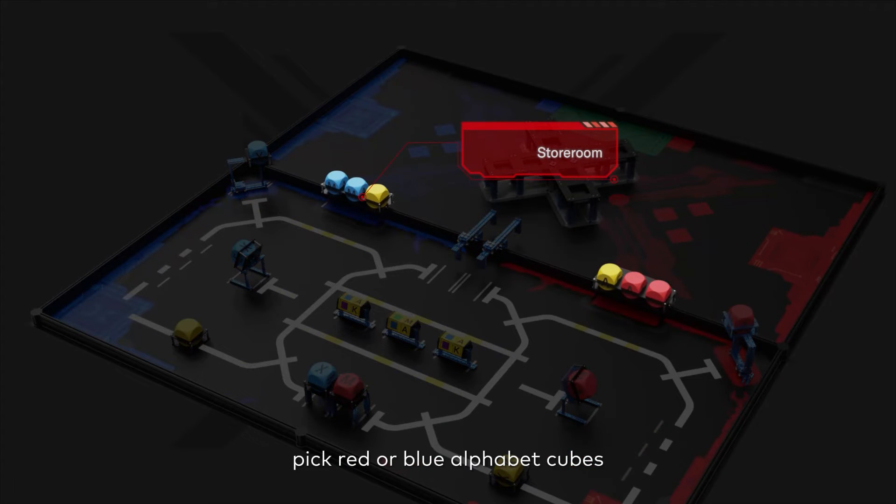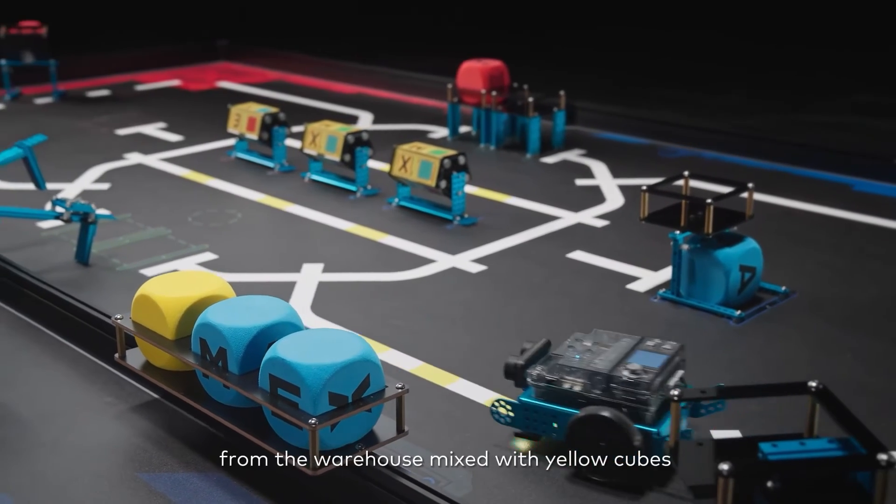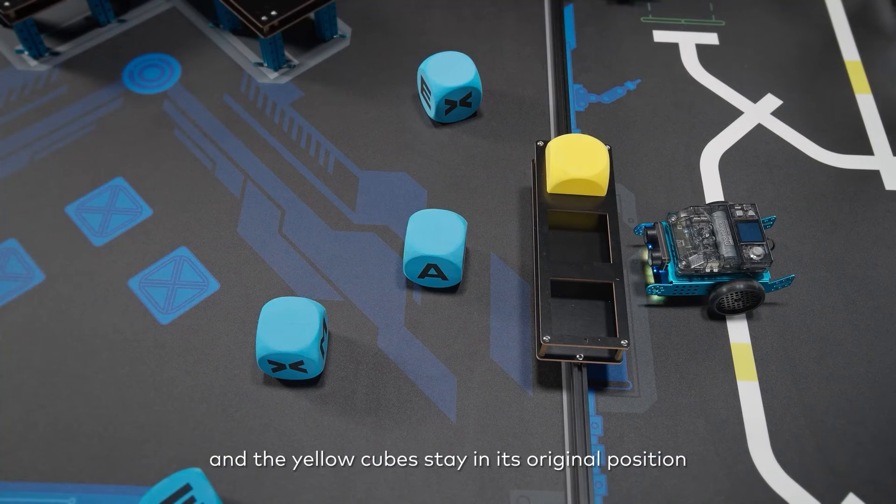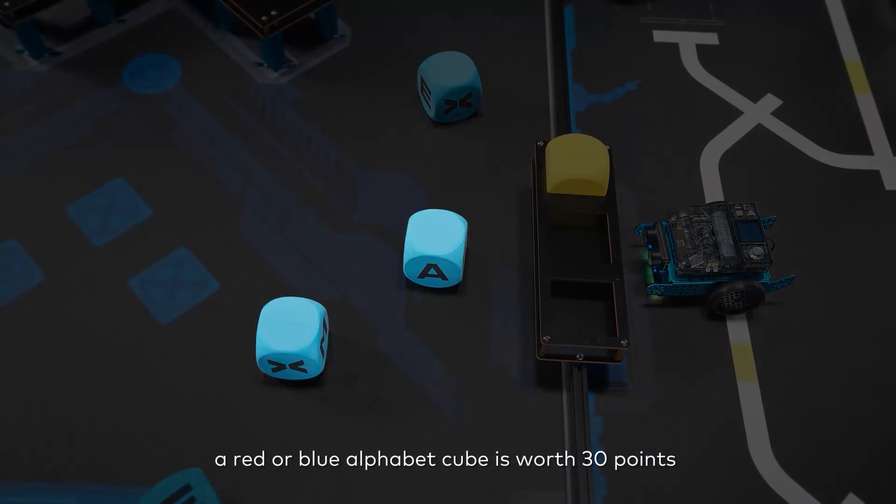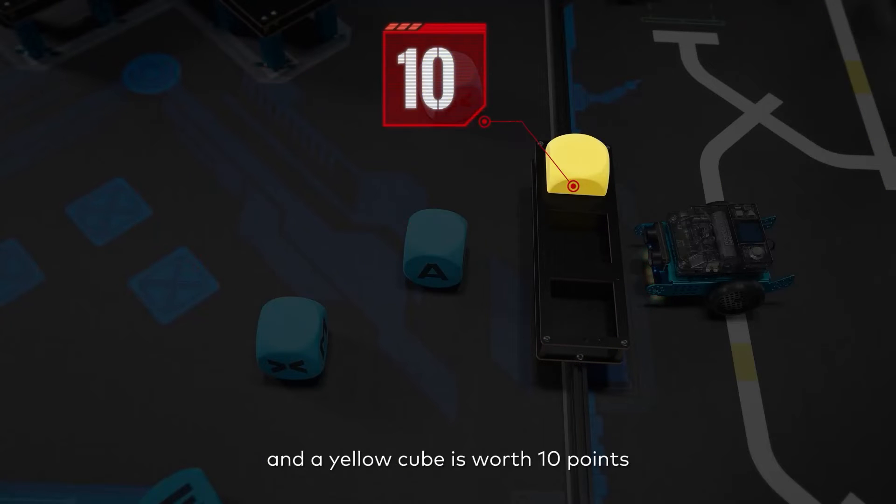At the central resource shelf, pick red or blue alphabet cubes to send to the manual area from the warehouse mixed with yellow cubes, and the yellow cubes stay in their original position. A red or blue alphabet cube is worth 30 points, and a yellow cube is worth 10 points.